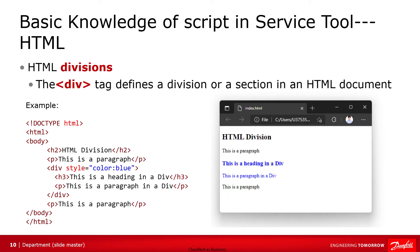The division element is often used as a container for other elements. A division element is defined by the div tag. Here is an example. In the HTML document, we use the div tag to define a division element, and use CSS language to set the font color to blue. In this division, we define a heading and a paragraph. We can see the result when running in the browser. The font color inside the division is blue, outside is black.